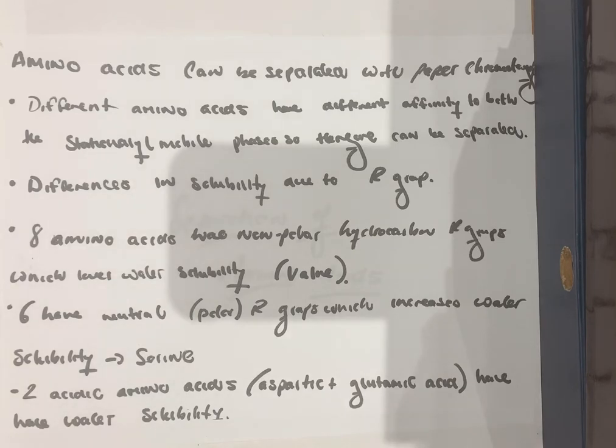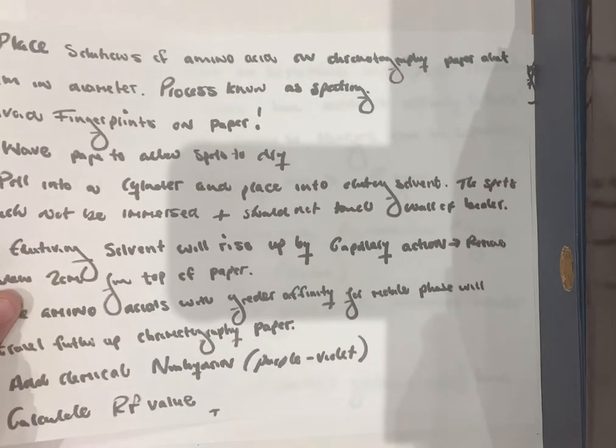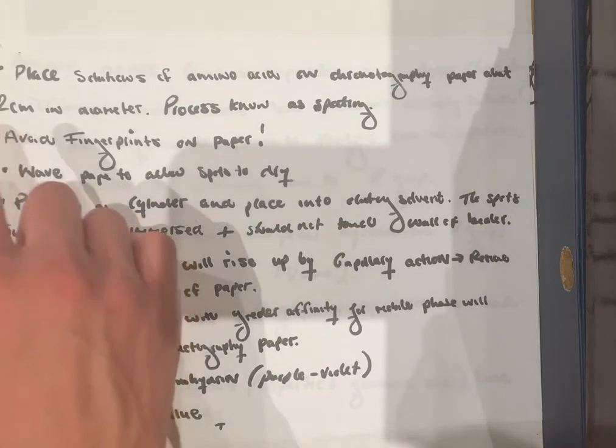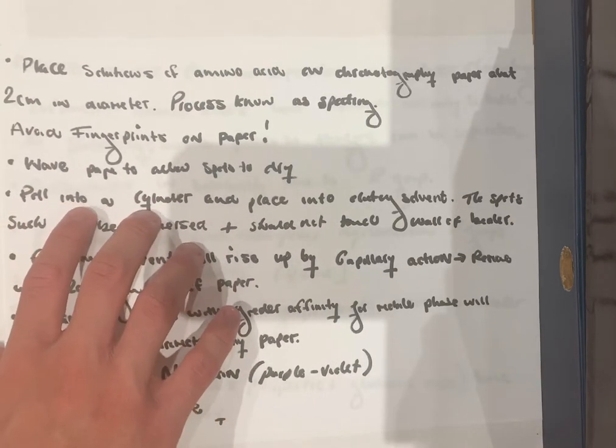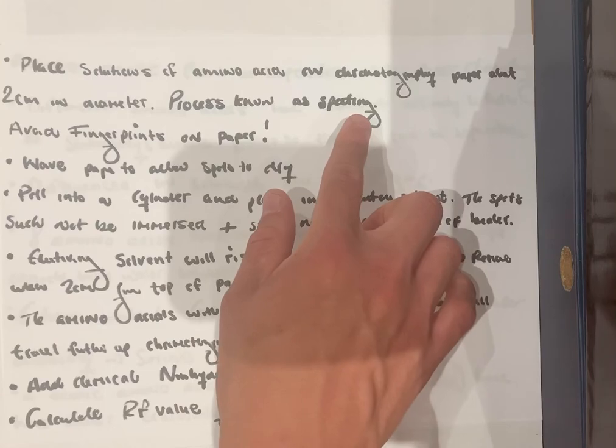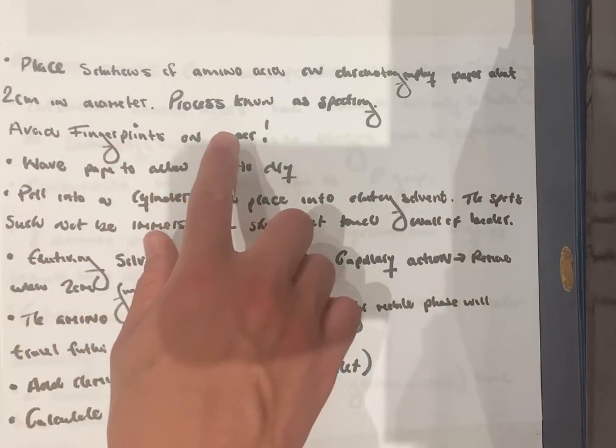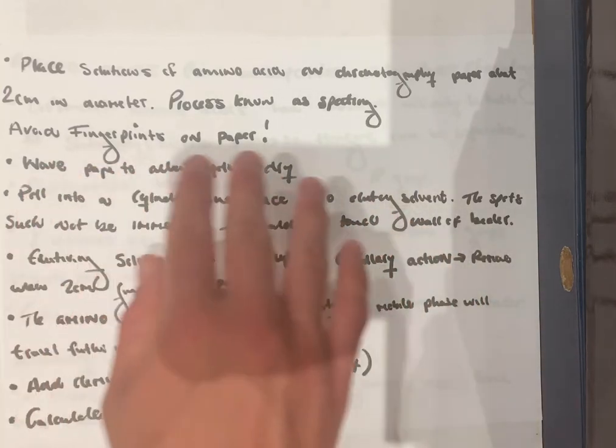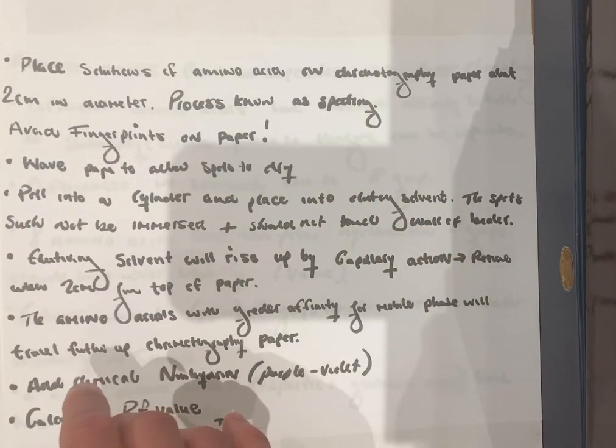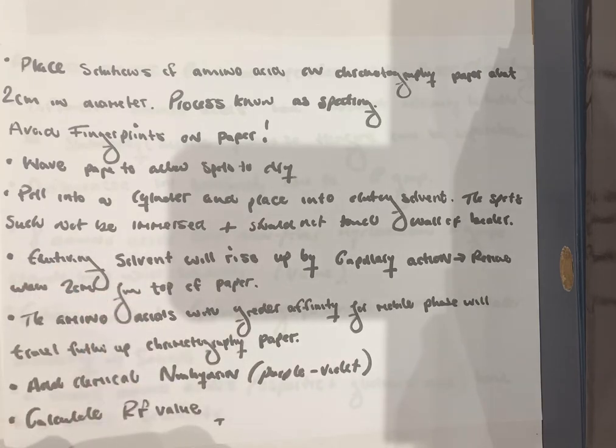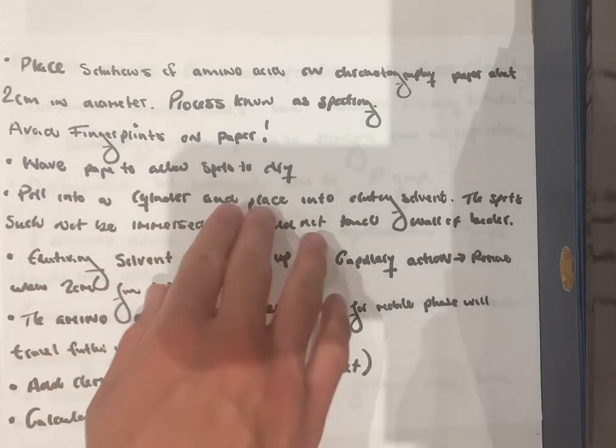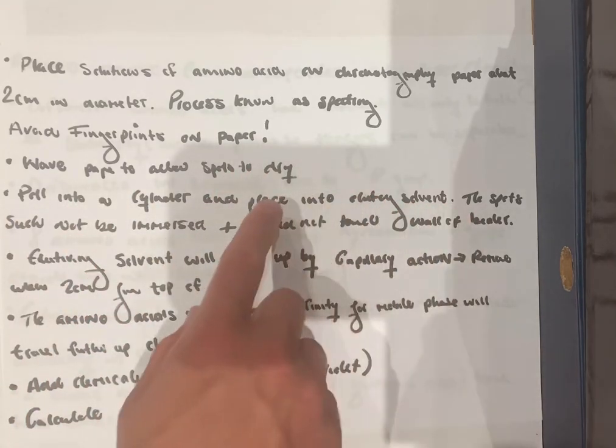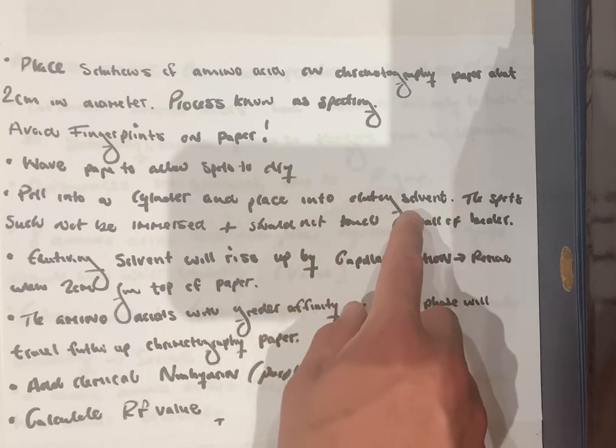Now I'm going to look at the technique to separate them. What you have to do is place solutions of amino acid on chromatography paper about two centimeters in diameter. This is a process known as spotting. You must try to avoid fingerprints on the paper because oils on your finger may run onto the paper and may make the results inaccurate. Wave the paper to ensure that the spots are dry.